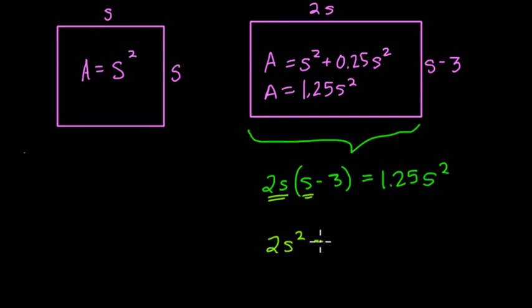Then we're subtracting. So it's subtracting 2S times 3 or 6S, right? 2 times 3 is 6. It's like three groups of 2S or 6S. And that equals 1.25S squared.